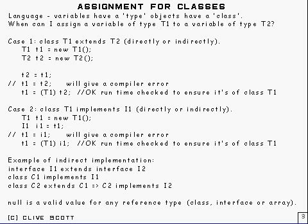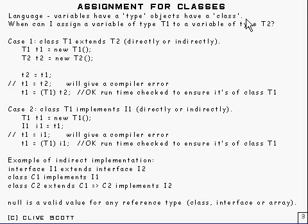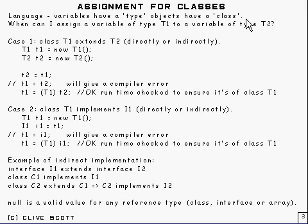First of all I want to get some language sorted out. Variables have a type and objects have a class. Objects are sitting somewhere in memory — in the heap usually — and they have a particular class. The variable that you're using to reference that object has a particular type. There's a distinction between those two things.